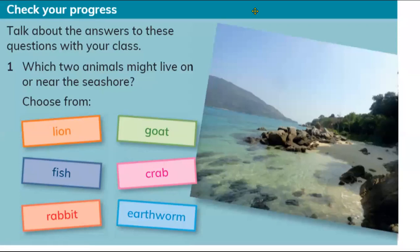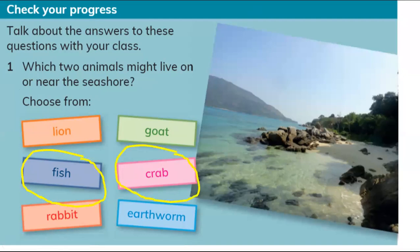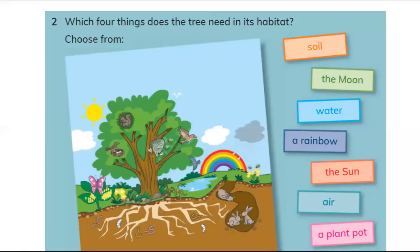Now let's check your progress in the science learner's book by reviewing what we learned in unit one. Question one: which two animals might live on or near the seashore? Fish and crabs can live there, but lions, rabbits, and other animals need a different environment — they cannot survive here because they don't have enough food.